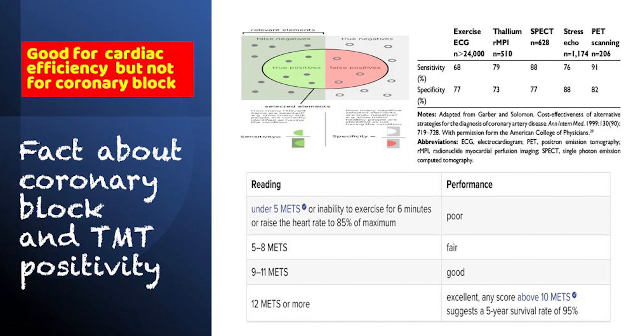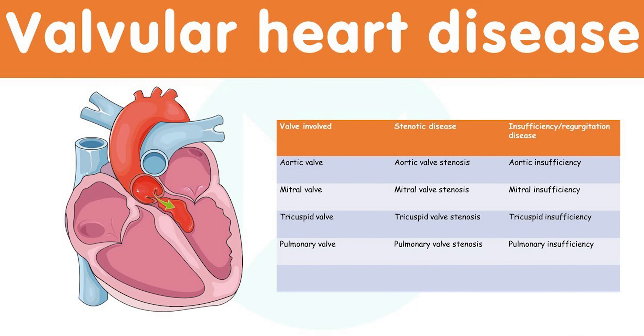If you have heart blocks or coronary blocks, ECG changes will start appearing. At the same time, your blood pressure response will also show some differences. In diseases like valvular heart disease — where the valve has issues — blood pressure will start dropping. These are the markers we observe during the treadmill test, from which we make an inference that you may have a heart-related problem that needs further evaluation.